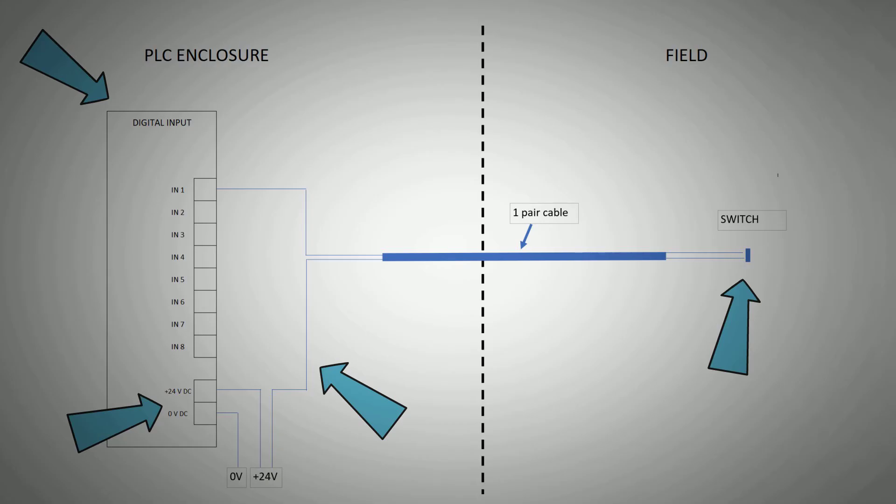When our switch's contact opens and closes, it puts 24 volts on and off the input card channels and thus gives a condition change within the PLC controller.